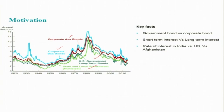Some of the differences you can see here: looking at this figure, the corporate bond rate of interest is greater than the government bond. And within corporate, the corporate AAA bonds rate of interest is less than corporate BAA bonds. Similarly, looking at short-term and long-term bonds, we have seen that the short-term interest rate is less than the long-term interest rate, even within government bonds.